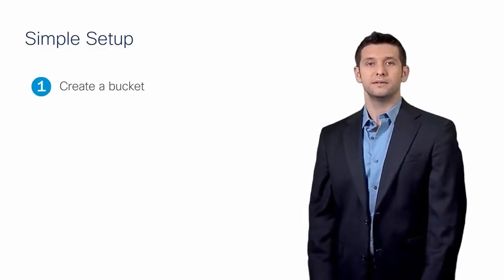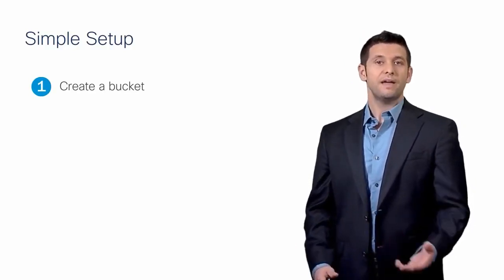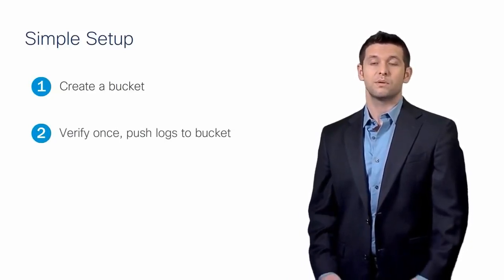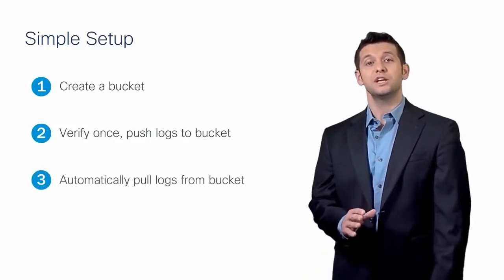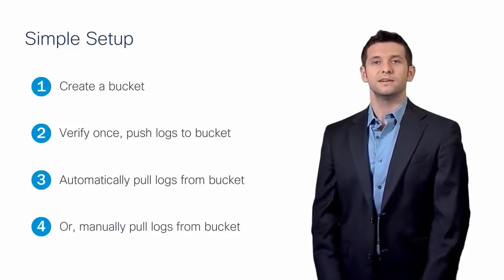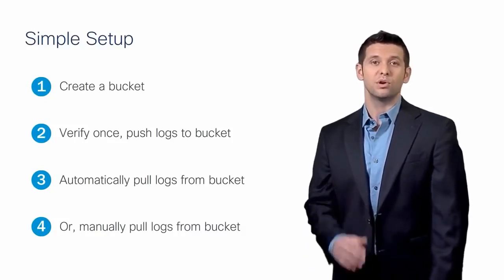It's easy to set up this integration. Customers will be responsible for purchasing their own Amazon S3 instance. The first step is to create a new bucket, which is a container for objects stored in Amazon S3. In the Umbrella dashboard, they'll enter the name of their S3 bucket and then verify the connection. After that, they'll be able to start pushing DNS logs from Umbrella to Amazon S3. From there, customers can set up integration with a SIEM to automatically or manually pull logs from the bucket.